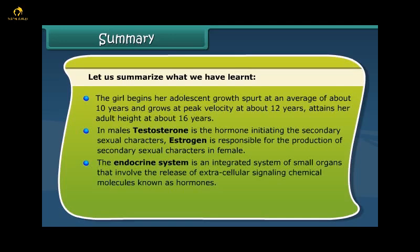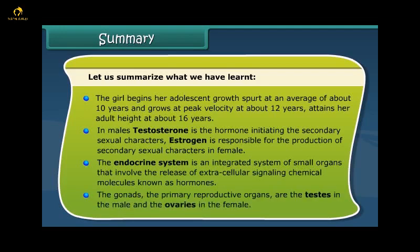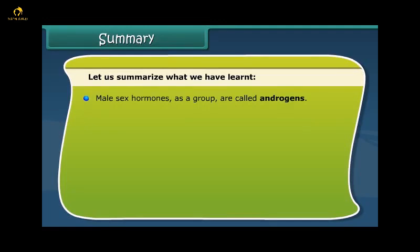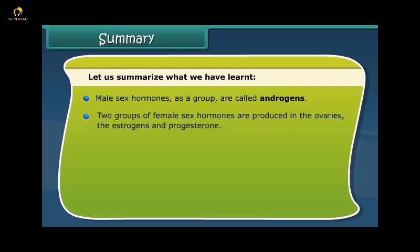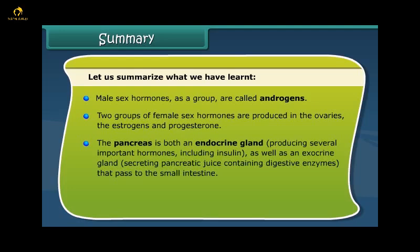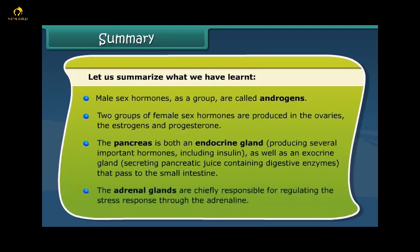The endocrine system is an integrated system of small organs that involve the release of extracellular signaling chemical molecules known as hormones. The gonads — the primary reproductive organs — are the testes in the male and the ovaries in the female. Male sex hormones as a group are called androgens. Two groups of female sex hormones are produced in the ovaries: the estrogens and progesterone. The pancreas is both an endocrine gland producing several important hormones including insulin, as well as a gland secreting pancreatic juice containing digestive enzymes that pass to the small intestine.